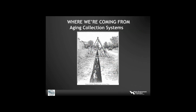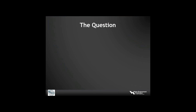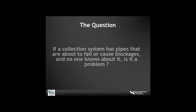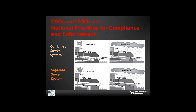Sewer collection systems are aging. In New England we find some systems are very old, having been built with historic technology, and we nearly always find pipes over 100 years old in our classes. Even in other areas of the country, many systems put in after World War II in the 40s and 50s are now approaching 70 years old. This leads to the question: if a collection system has pipes about to fail or cause blockages and no one knows about it, is it a problem? Whether a combined system or a separate sanitary system, overflows are now targeted for compliance and enforcement.